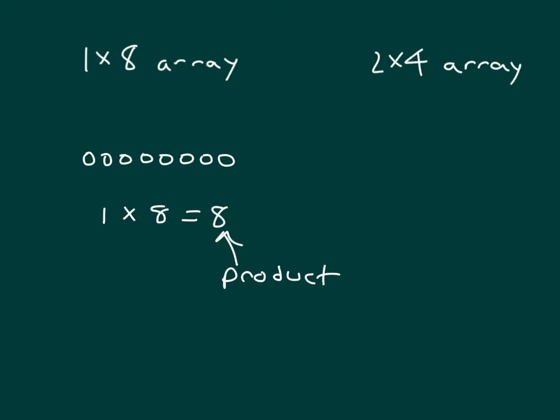Our answer to a multiplication problem is called a product, and these two numbers are called factors. With our 2 by 4 array, we would have 2 rows of 4 each. We'd write that out the same way with our multiplication sentence: 2 times 4 equals 8.